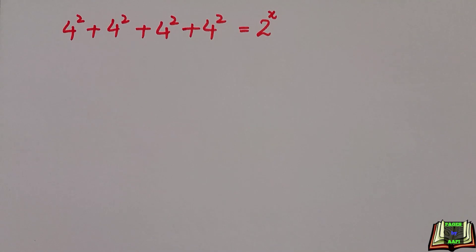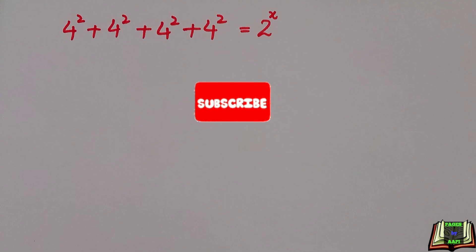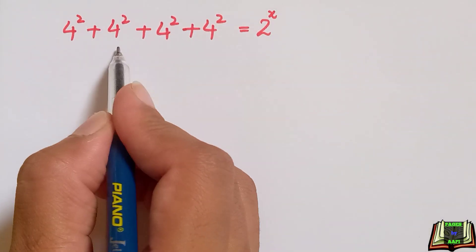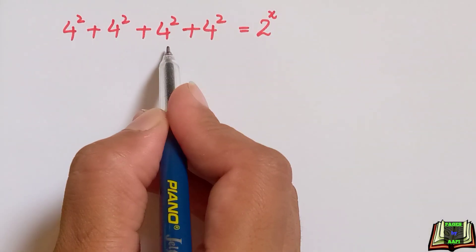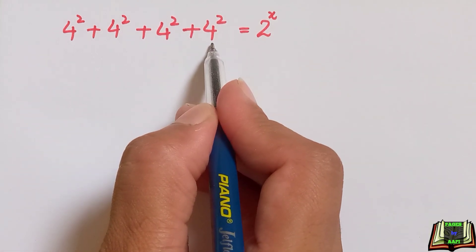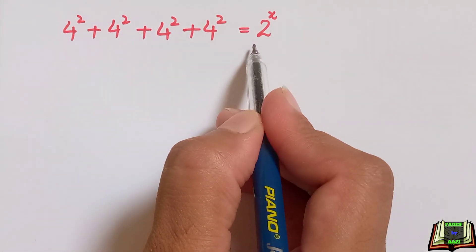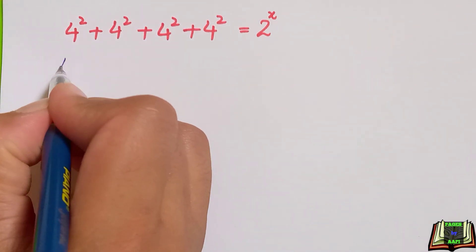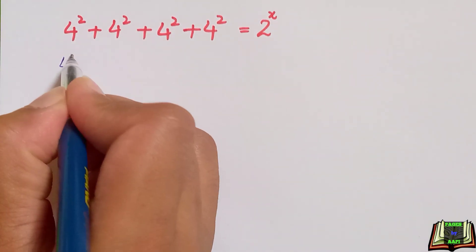Welcome back! One question and two different methods to find the solution, so all of you must watch this video carefully. I hope you are going to enjoy finding the value of x in two different ways: if 4 raised to power 2, plus 4 raised to power 2, plus 4 raised to power 2, plus 4 raised to power 2 is equal to 2 raised to power x. Let's get started.